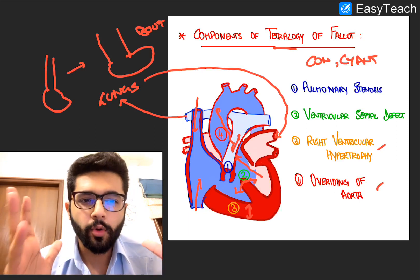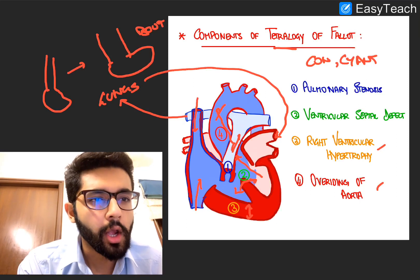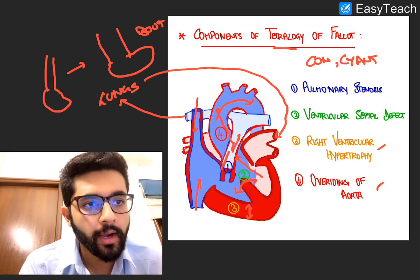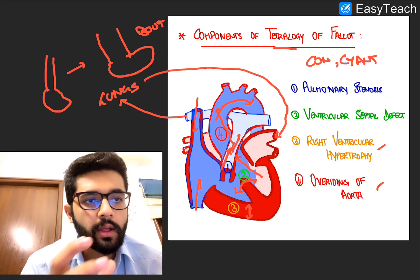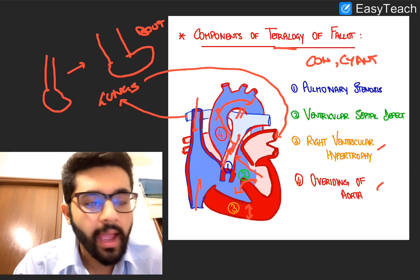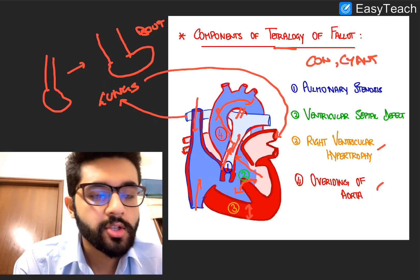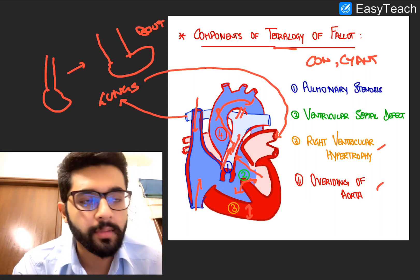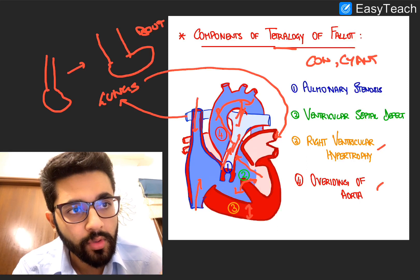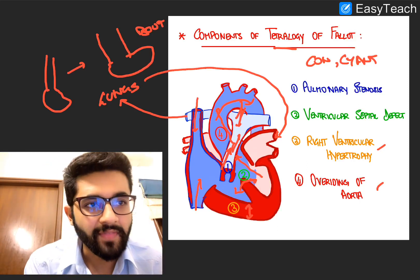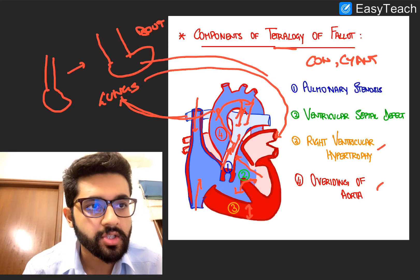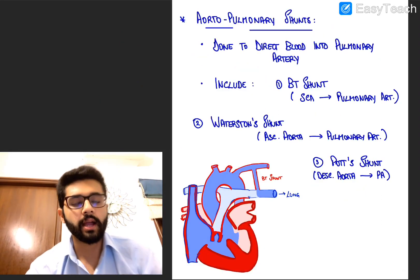Basically, you have a lot of deoxygenated blood in the aorta and very little or no blood moving into the pulmonary artery. The idea of BT shunts and other shunts is to create a shunt between the pulmonary artery and the aorta. All these aortopulmonary shunts direct blood from the aortic system to the pulmonary system so that it can be oxygenated.